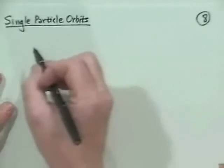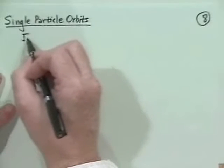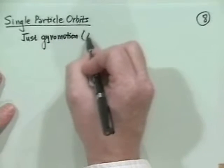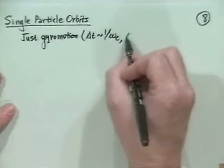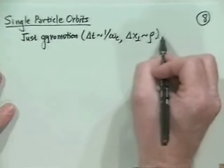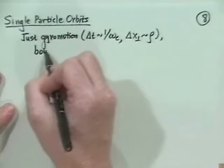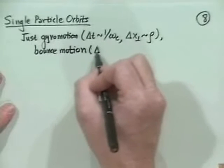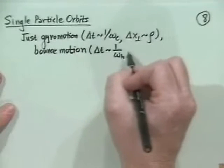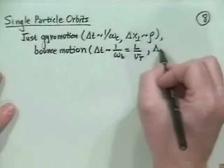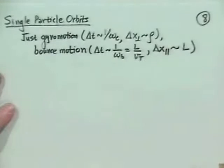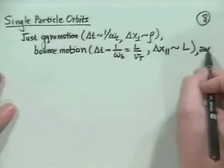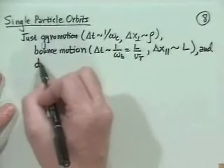Single particle orbits consist of gyro motion with a timescale Delta T of order one over the cyclotron frequency and a spatial step of order the gyro radius, plus bounce motion with a timescale Delta T of order one over the bounce frequency — which is the length over the thermal velocity — and a spatial step of order the length of the machine.